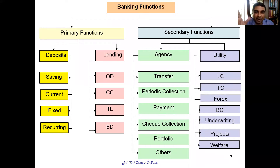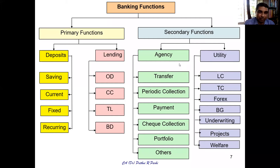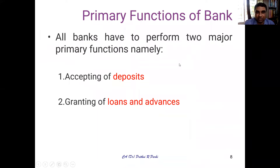Now you have a broad idea. To recap: primary and secondary — primary consists of deposits and lending; secondary functions consist of agency functions and utility functions. Now one by one we'll discuss each function. Primary functions can be classified into two major categories: acceptance of deposits and granting of loans and advances.